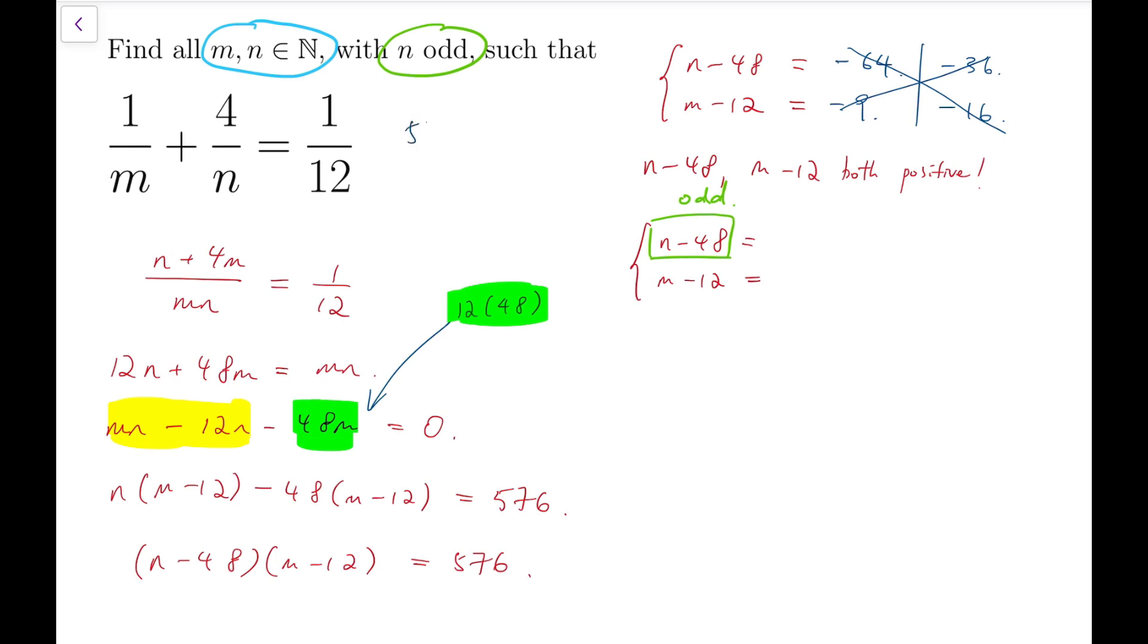Now, recall that 576 is actually equal to 9 times 64, which means it's 3 squared times 2 to the 6. So, the only odd factors are 1, 3, and 3 squared.